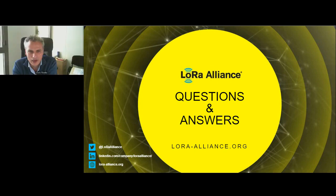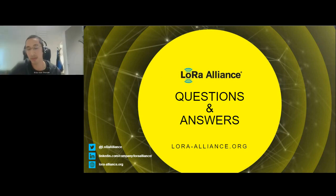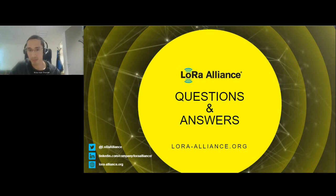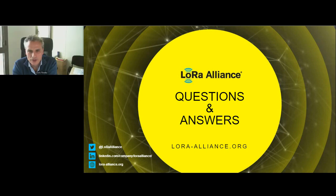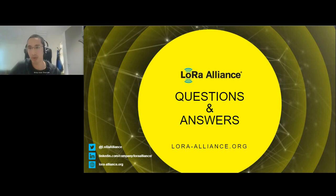From Juan José: can a relay work as an end node simultaneously? Yes. They can work as a relay in the background, and when they want to send their own frames, they can just use their uplink link. However, the relay will not be able to perform relay functions during its own application uplink. If you really mean simultaneously at the exact same time, you would need two transceivers — but they can work one after the other.